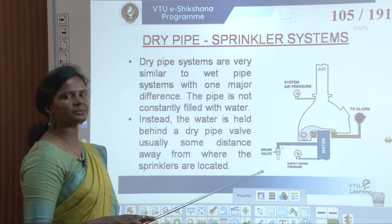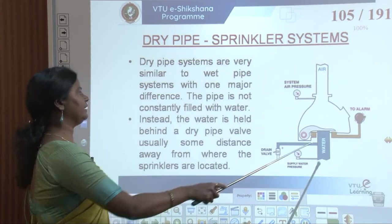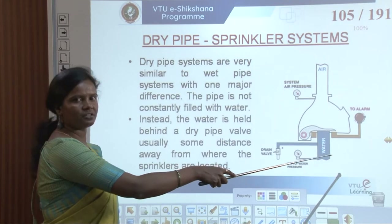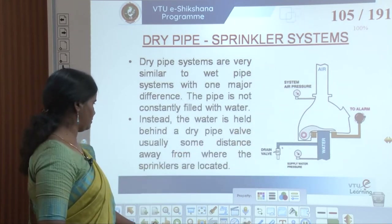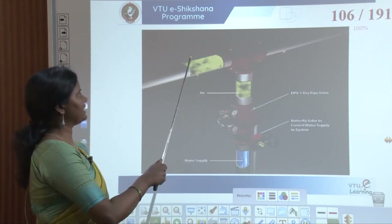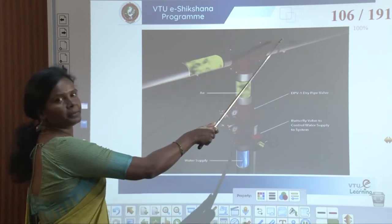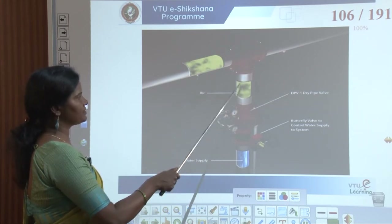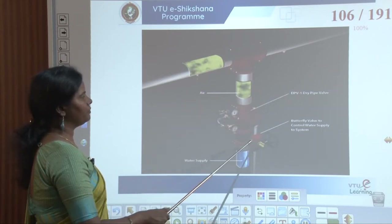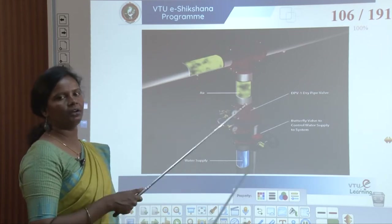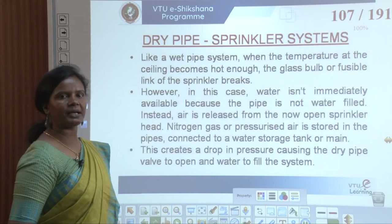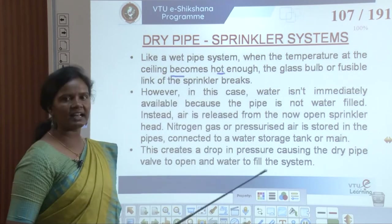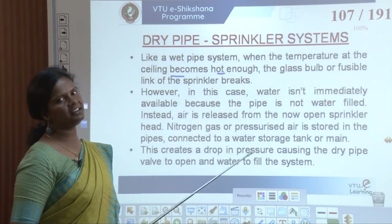The smoke or detection alarm is kept near the sprinkler with system air pressure. In the dry pipe, air is filled in the pipes, and there is a dry pipe valve located just below the pipe, along with a butterfly valve to control the water supply. Like a wet pipe system, when the temperature at the ceiling becomes hot enough, the glass bulb or fusible link of the sprinkler breaks.